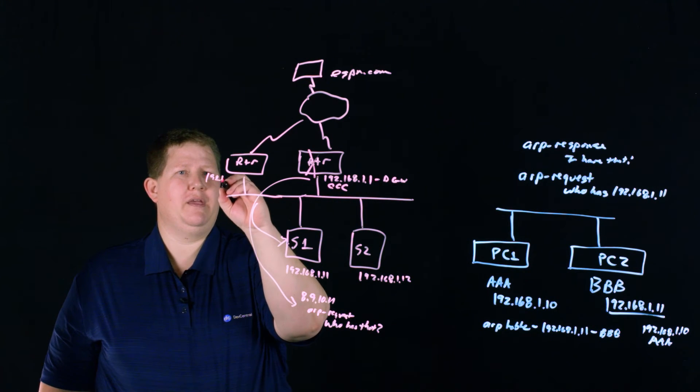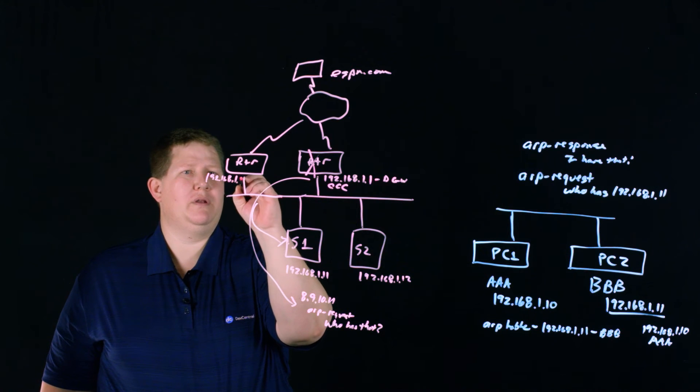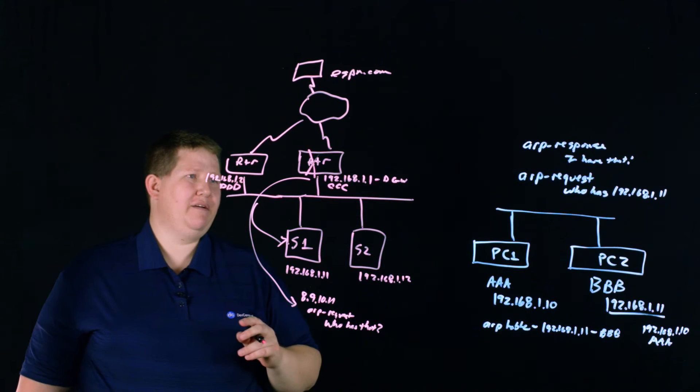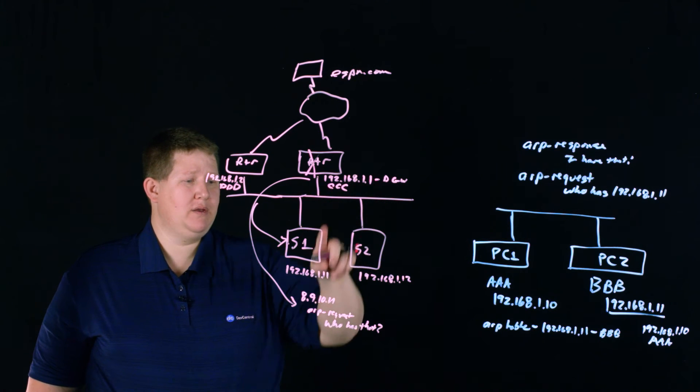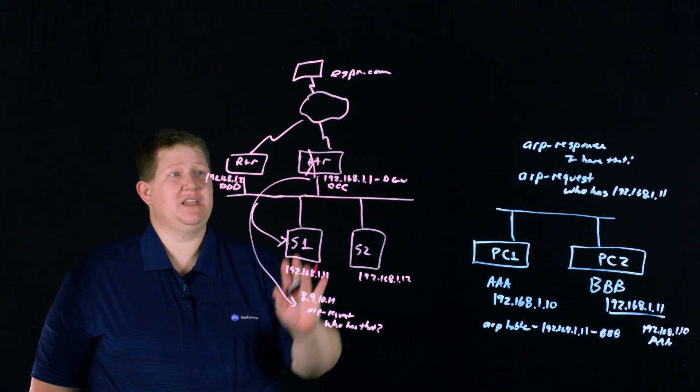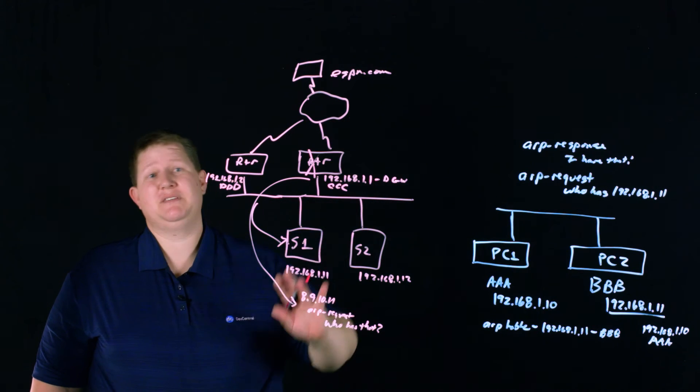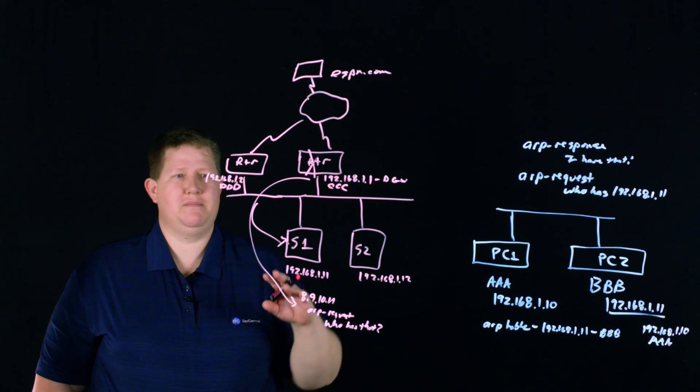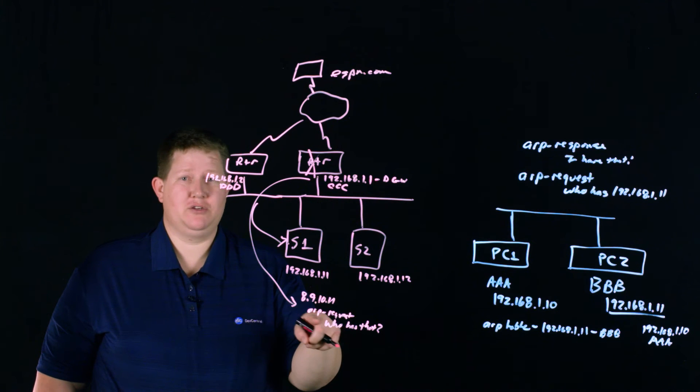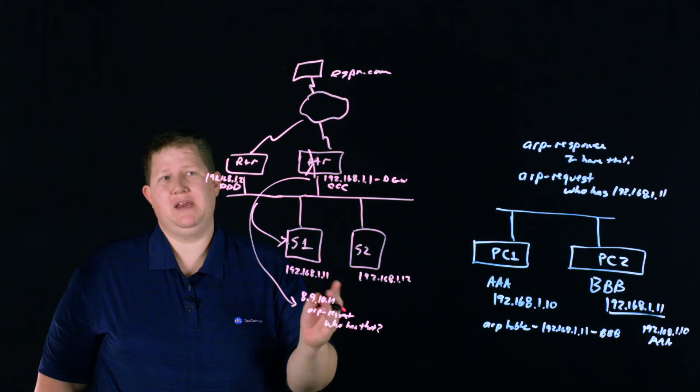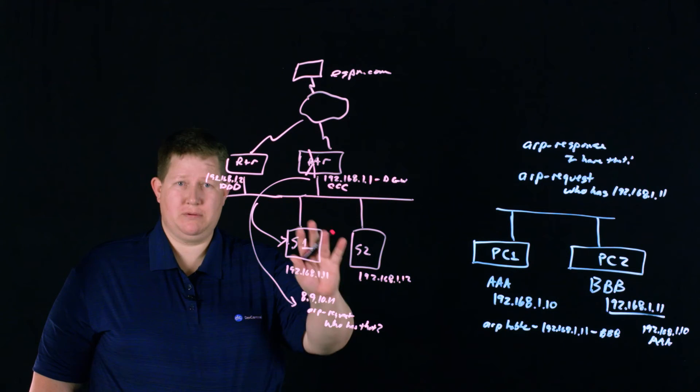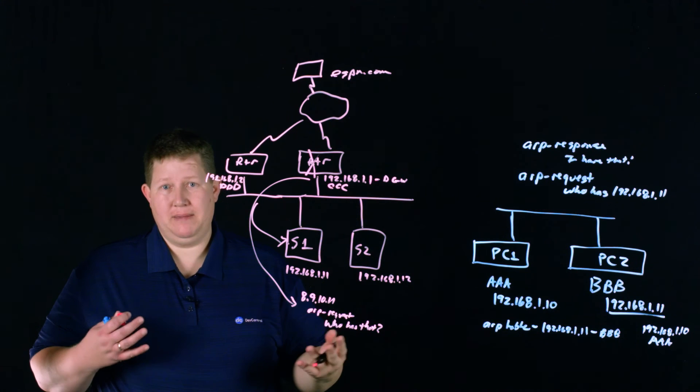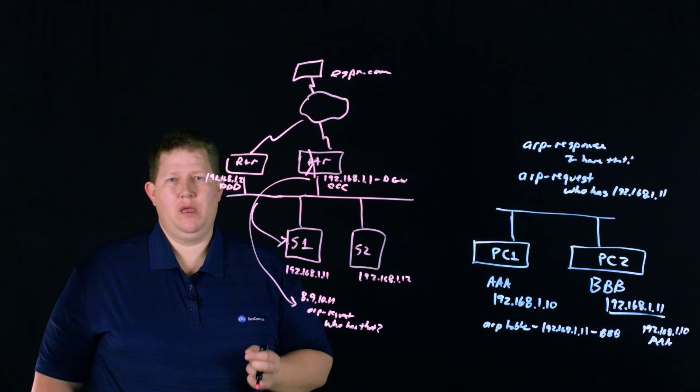And so in the event this router goes away, then this is, say, 192.168.1.2 with a MAC address of DDD. Well, I already have my default gateway is 1.1 and I'm going to go to CCC. So I'm sending that traffic here. This has failed. I'm still sending that traffic here because I don't have any kind of a way initially until my ARP cache expires that I need to send that to a different gateway. And so there's an issue of, or a time to where I might have some unavailability.